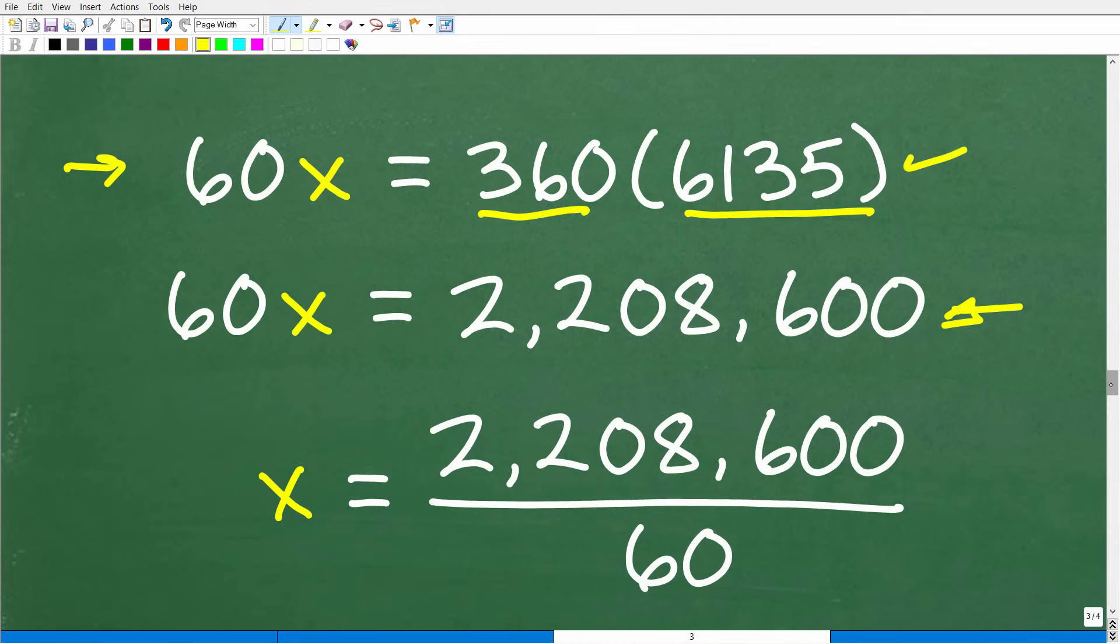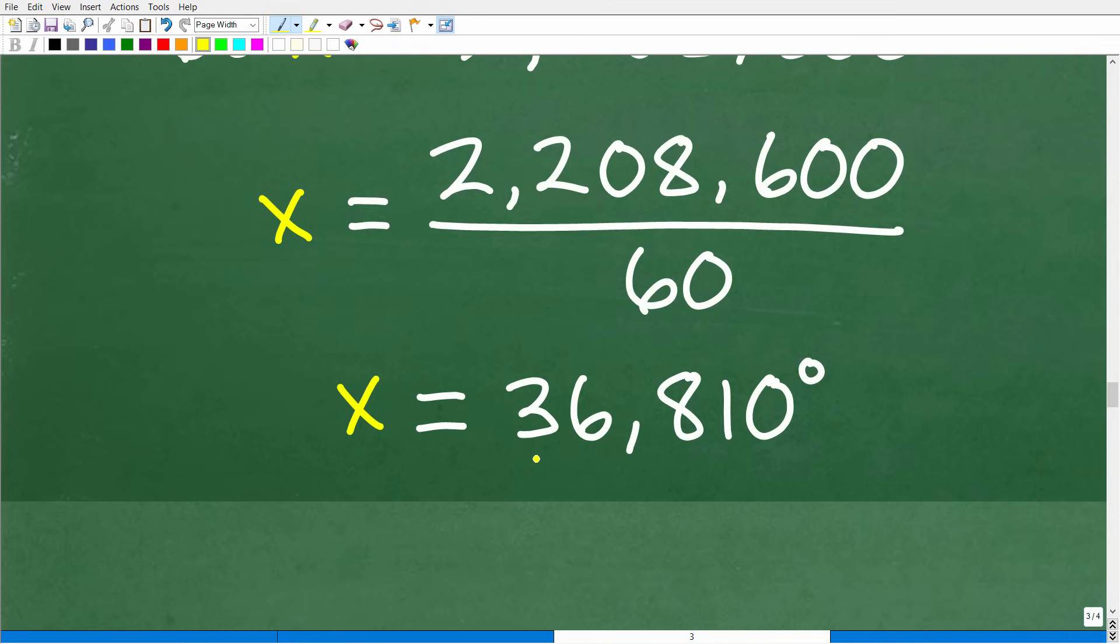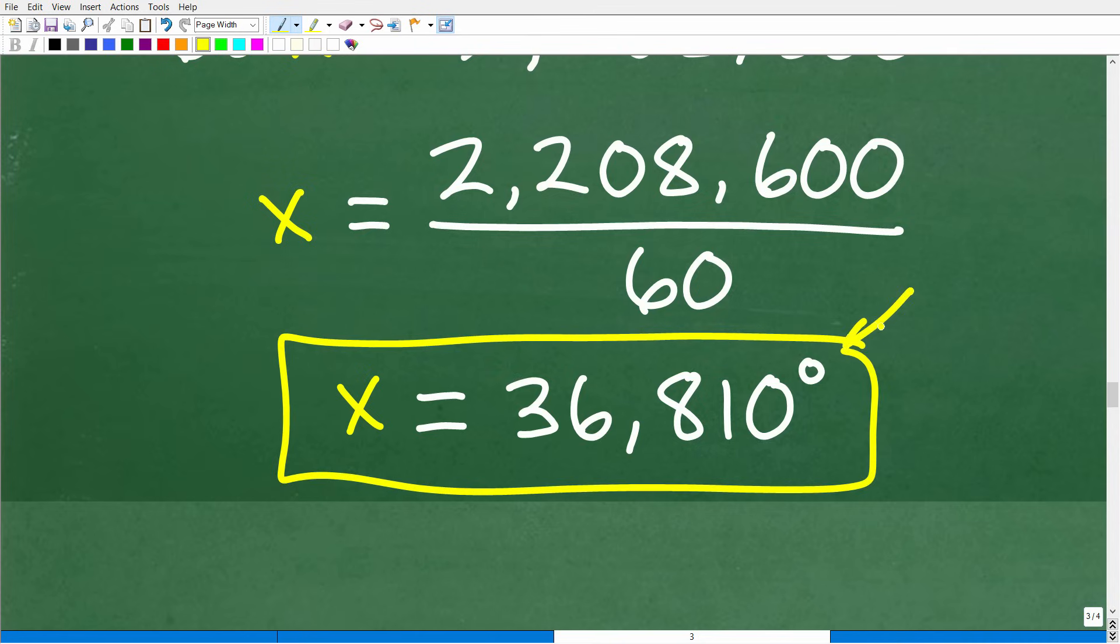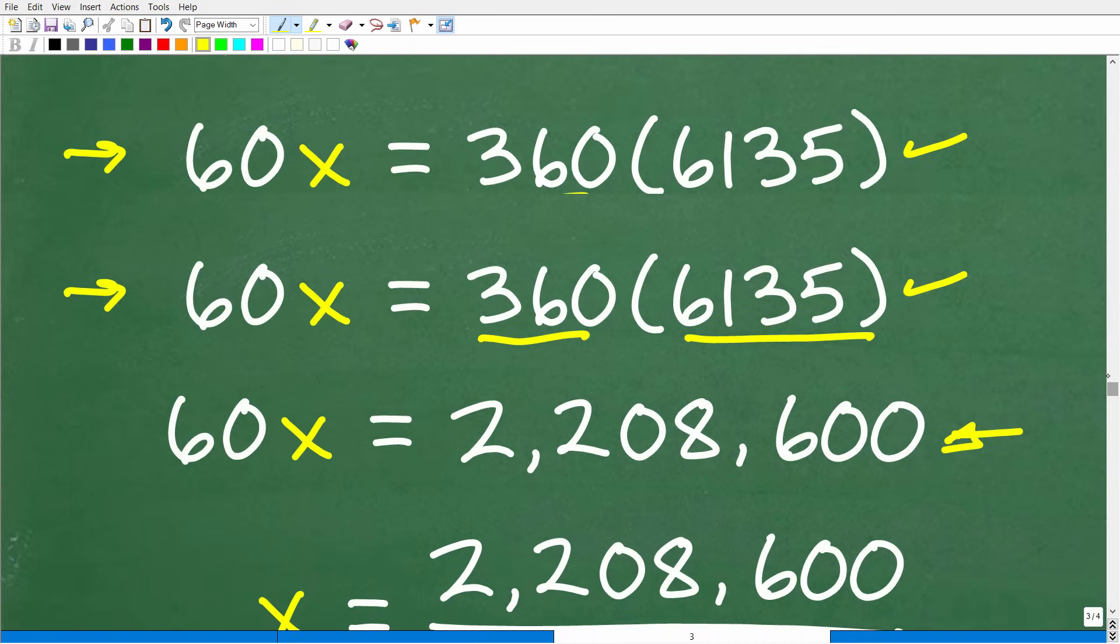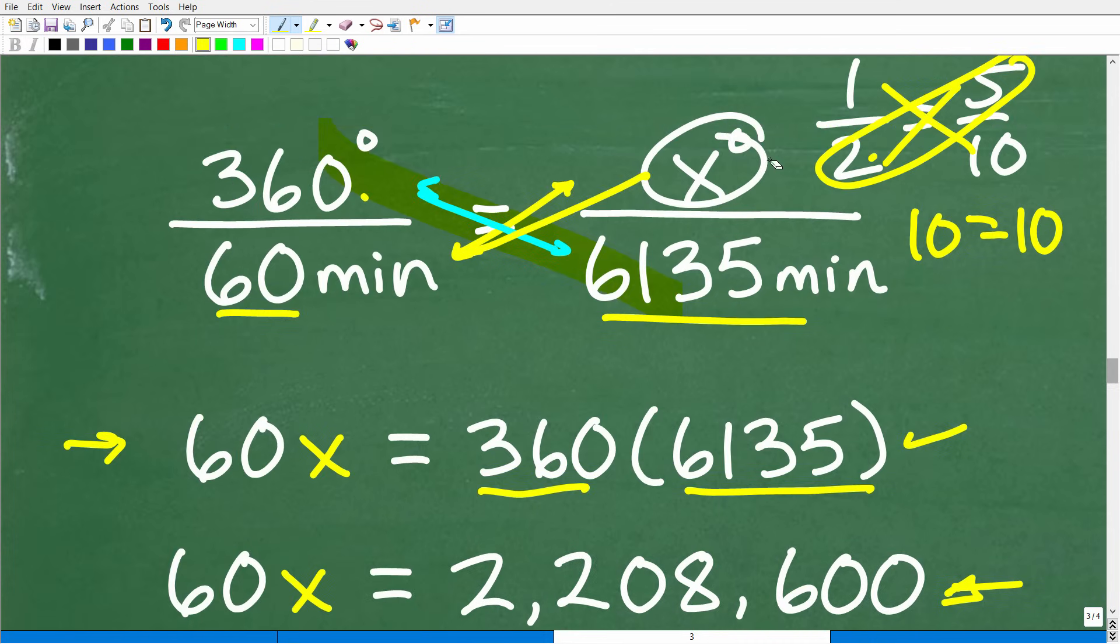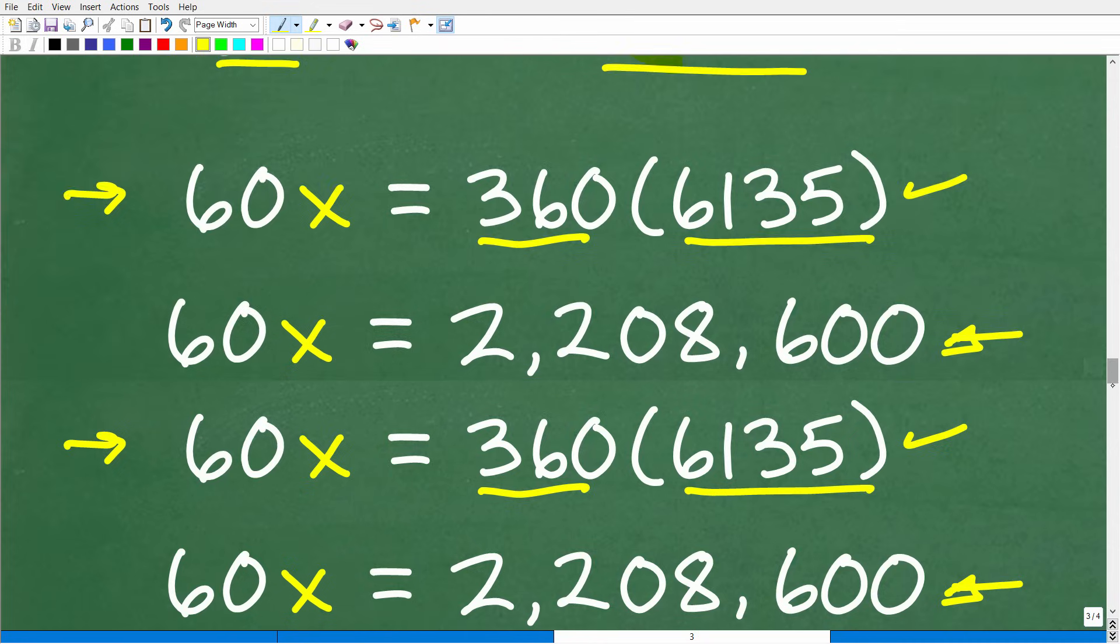Okay. So when we do that, we're going to end up with X equal to 36,810, but 810 degrees. This answer is in the unit of measure of degrees. So there it's that many degrees per this many minutes.